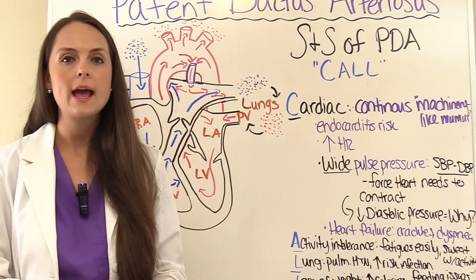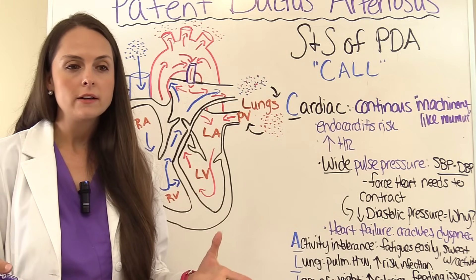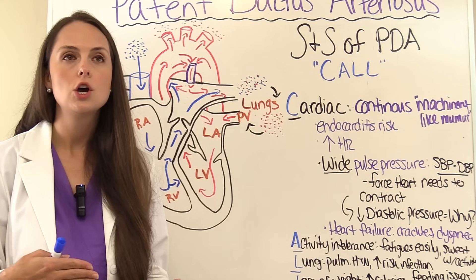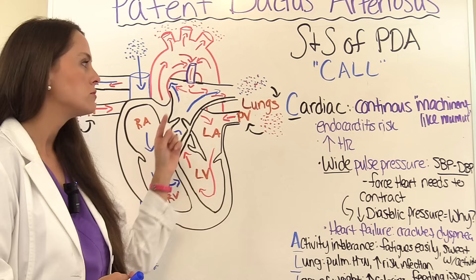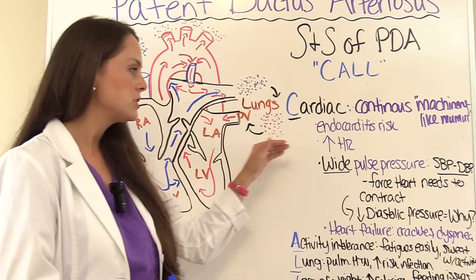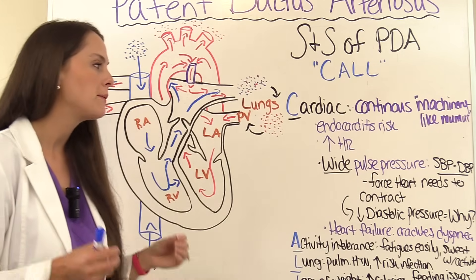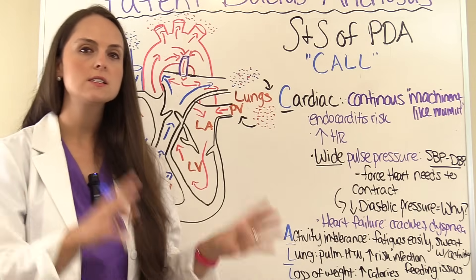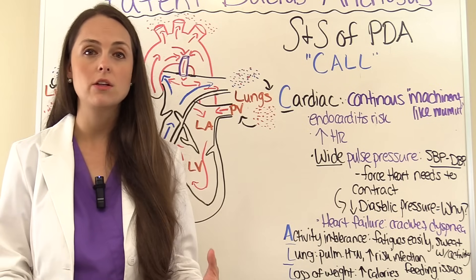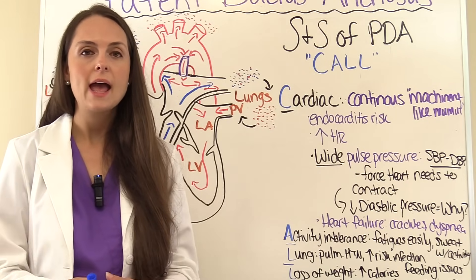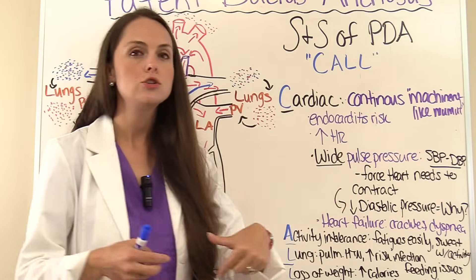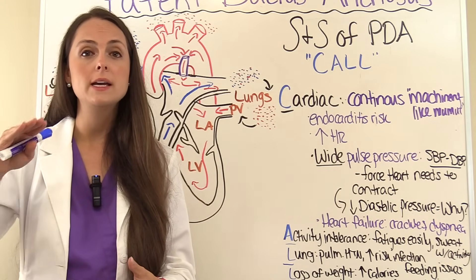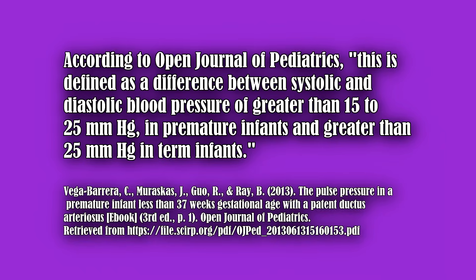They can also have an increased heart rate — because of the pulmonary issues, they have low oxygen levels and the heart has to work harder, plus it has to work harder to pump through those narrow arteries. In addition, they can have a wide pulse pressure. Pulse pressure is calculated by taking the systolic blood pressure and subtracting the diastolic blood pressure; that number represents the force needed for the heart to contract. In these babies it's going to be high.